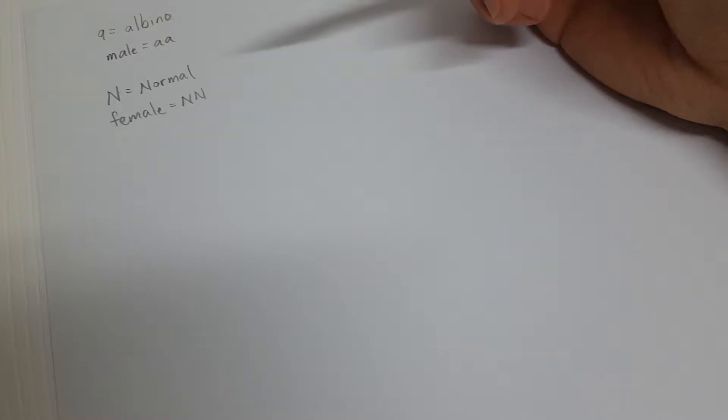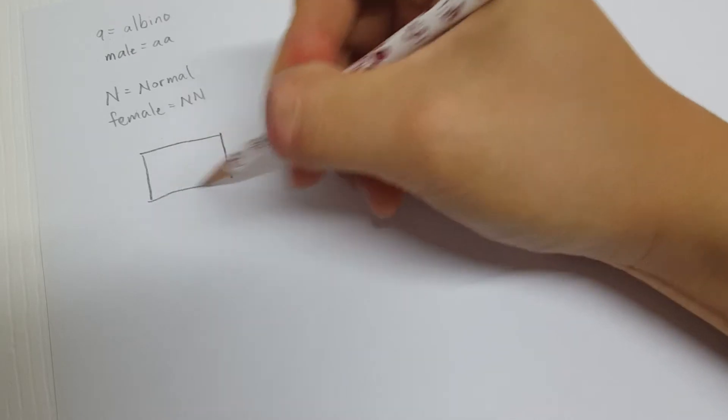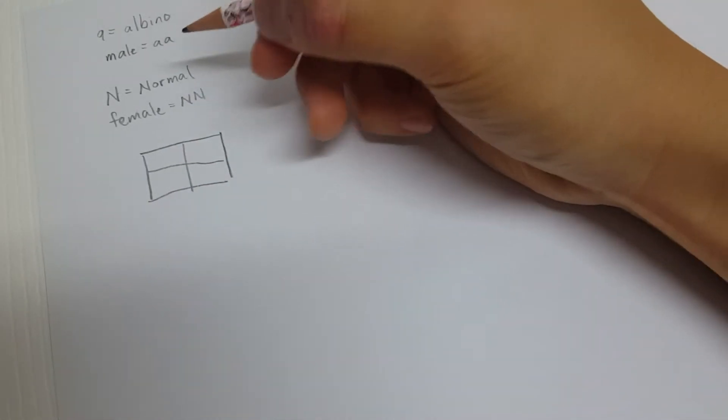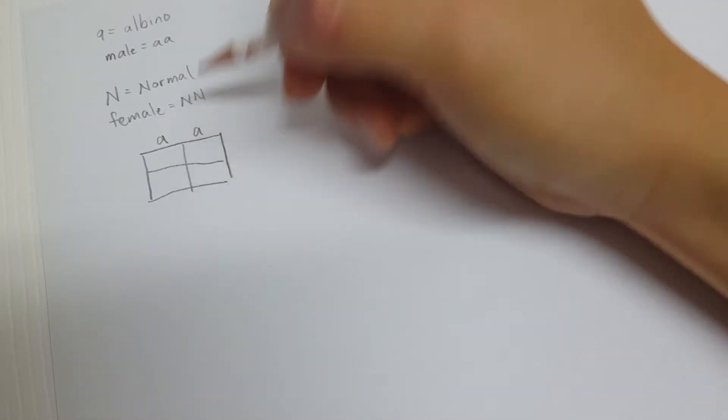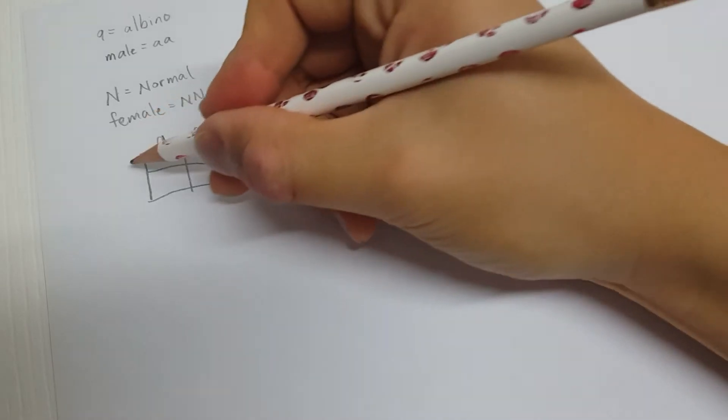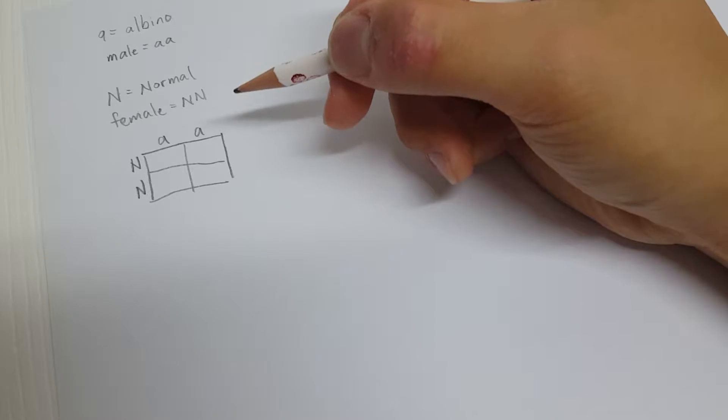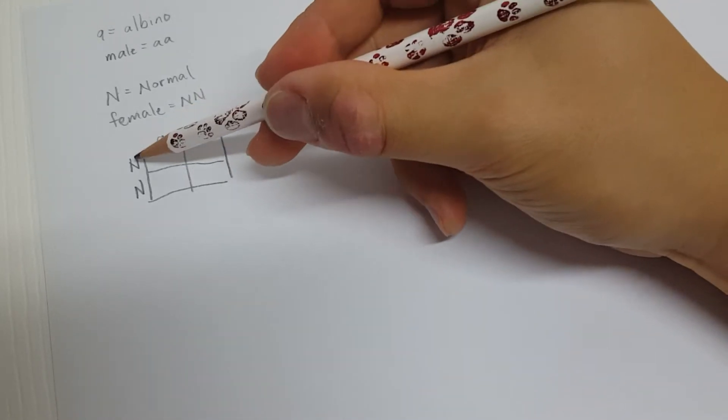Now let's put what we know to work in the Punnett Square. We simply create a 2x2 grid and put on top the A's for the male or the father and N's on the left for the female or the mother. Next, we need to factor the letters from top, down, and from left to right. So let's do that now.